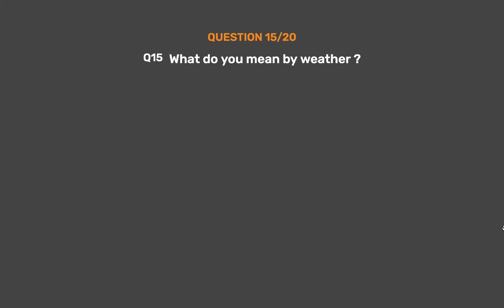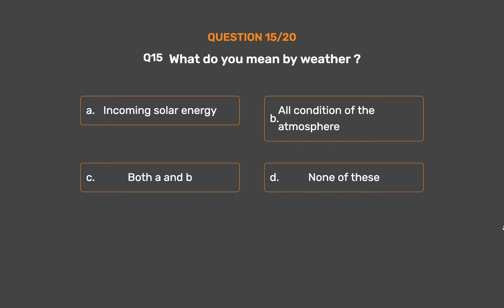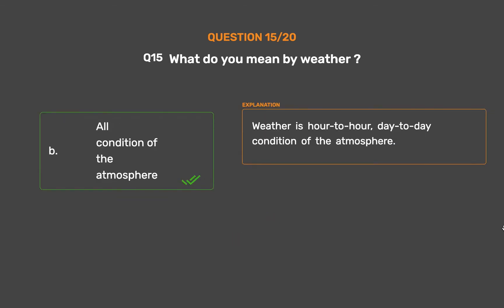Question number 15: What do you mean by weather? Option A: Incoming solar energy. Option B: All conditions of the atmosphere. Option C: Both A and B. Option D: None of these. The correct answer is Option B, All conditions of the atmosphere. Weather is the hour-to-hour, day-to-day condition of the atmosphere.